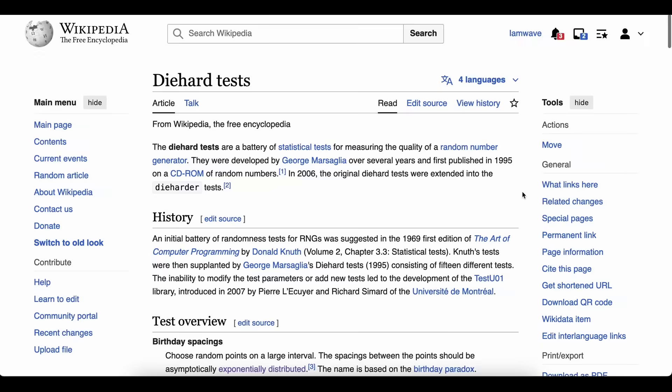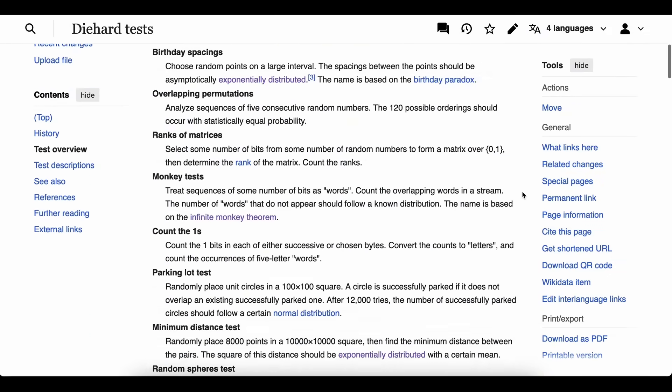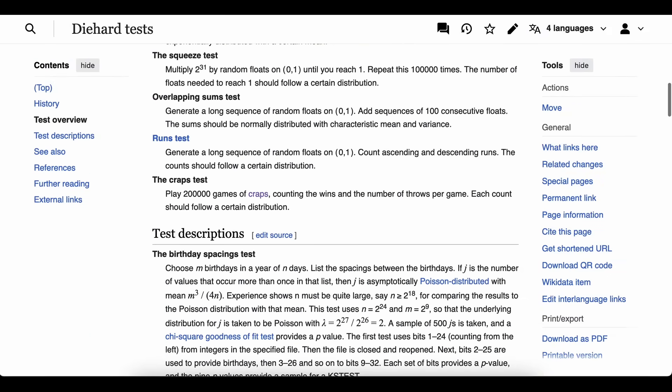Of course, in practice, pseudorandom generators are tested using many other statistical tests. Some of these are really fun. One involves using the generator to simulate games of craps and checking if the number of wins follows the expected distribution.